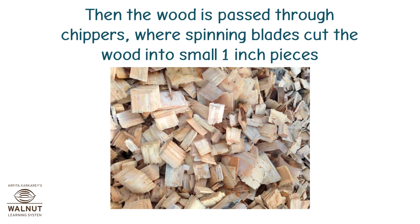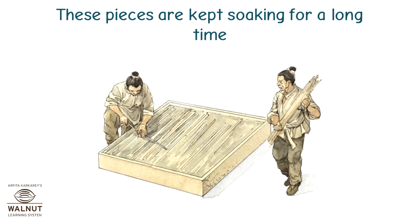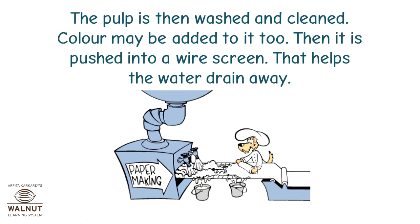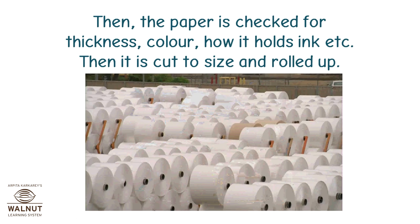The wood chips are cooked in large pressure cookers with water and chemicals. These pieces are kept soaking for a long time. The pulp is then washed and cleaned; colors may be added to it too. Then it is pushed into a wire screen that helps the water drain away. Then the dried pulp is passed through large heated dryer rollers to make paper.